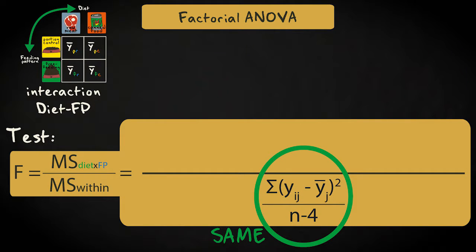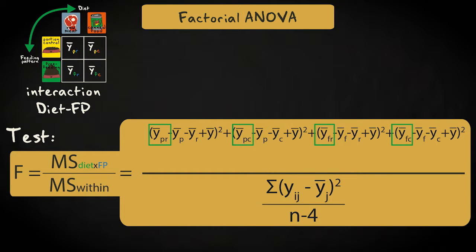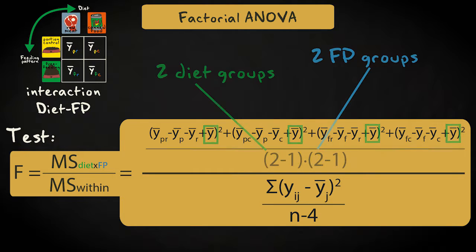The within-group variance for the interaction is calculated in the same way as before. The between-group variance is calculated by taking the individual group means, not the marginals, then subtracting the marginal means corresponding to that group's level of diet and feeding pattern, and adding the grand mean. The degrees of freedom for the interaction effect are the number of levels for the factor diet minus one times the number of levels for the factor feeding pattern minus one.